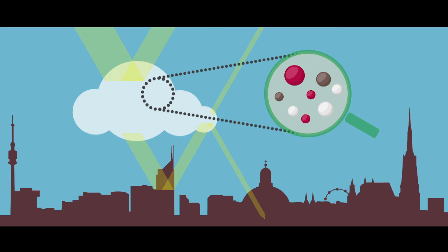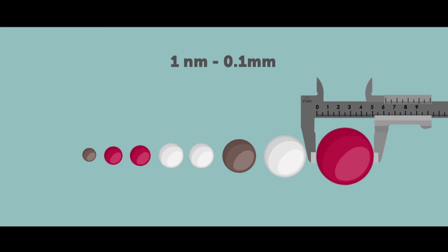In order to scatter, particles need to have the right size. In the atmosphere, we deal with particle sizes between one nanometer and a tenth of a millimeter. But what controls the size of a particle?